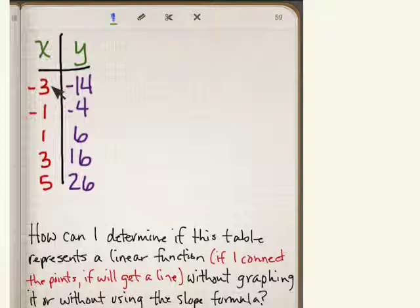And then on this side we have negative 3 to negative 1, which is adding 2. Negative 1 to 1 is 2, 1 to 3 is 2, positive 3 to 5 is 2.